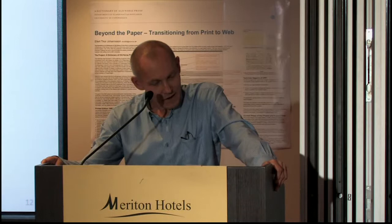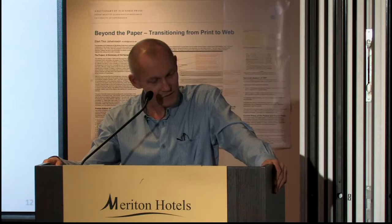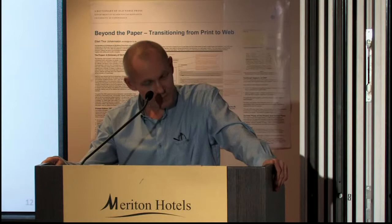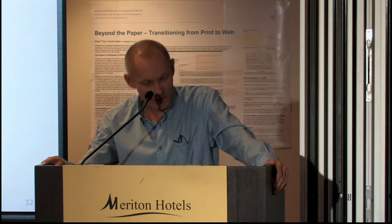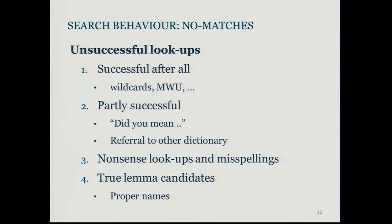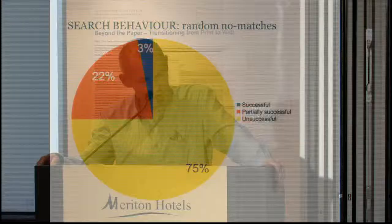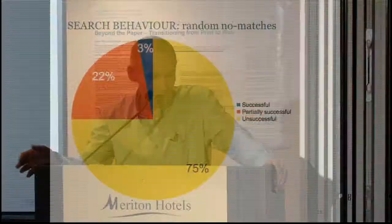Searches for multi-word units often give a result, and searches with wildcards also give a result, of course not in the form of one single dictionary entry, but rather a list of entries. Other searches that may be considered partly successful are if the user is asked if they meant something slightly different, or if there's a reference to the other dictionary on our site — a historical one covering older Danish. Another group is truly unsuccessful if the input is a nonsense string or a misspelling not caught by the did-you-mean function. And a fourth group may be interesting: the true lemma candidates, some of which may be proper names. If we take a look at 100 random no-matches, three out of four yield no result at all, whereas 22% give a partial result, and only 3 out of 100 are really successful.